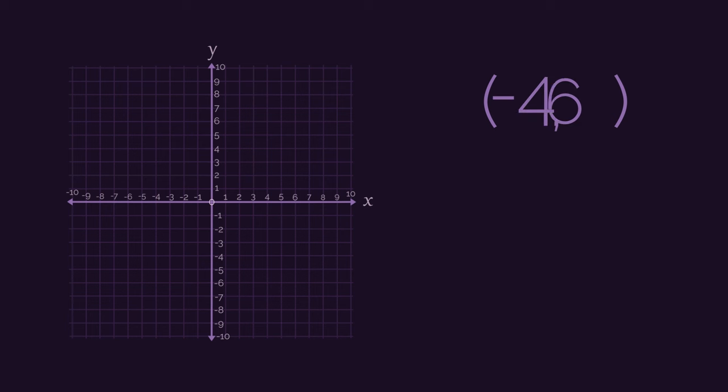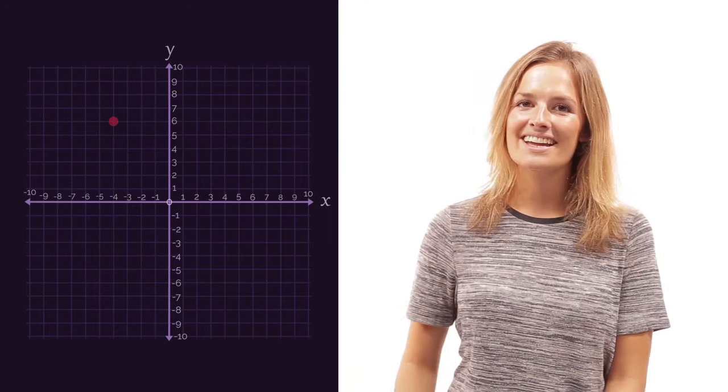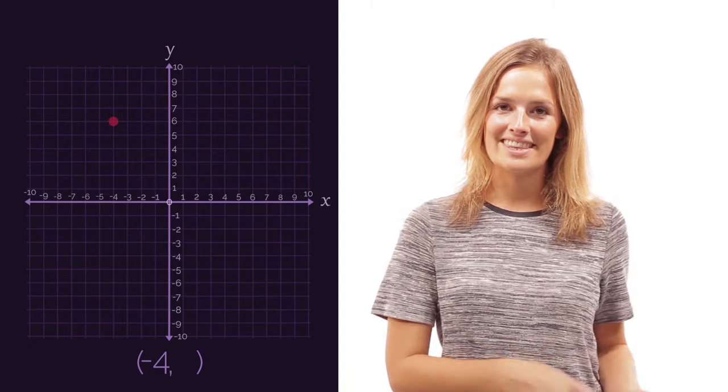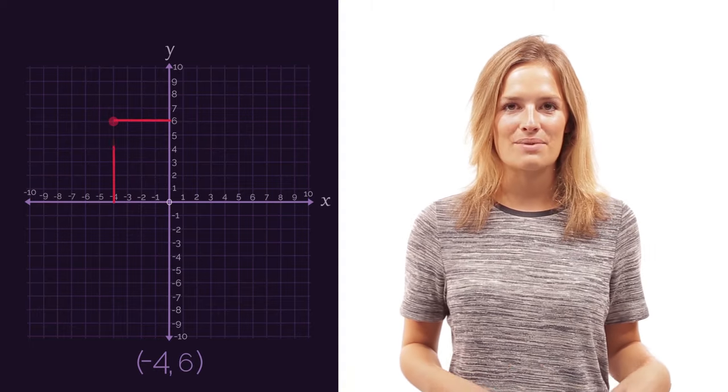Where would negative four six go on the grid? Pause the video, have a think and click play when you're ready to check. Did you think it was here? So it's negative four in this direction and six squares up.